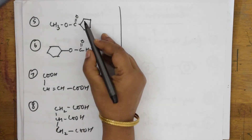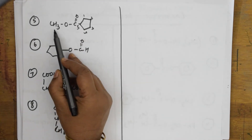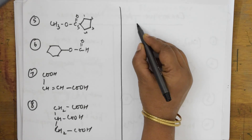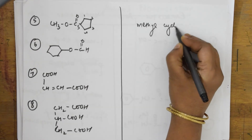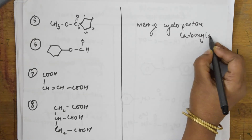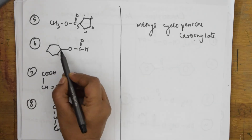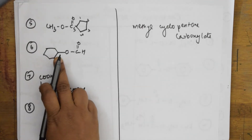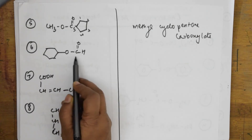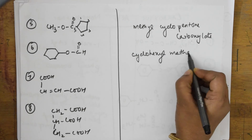Here you have a cyclo group — one, two, three, four, five — pent: cyclopentane. Along with that you have a carboxylate group and a methyl group. This is named as methylcyclopentane carboxylate. In the next example there is a cyclo group with six carbons — one, two, three, four, five, six — hexa. The cyclohexane has a hydrogen replaced by the carboxyl group, so this is named cyclohexyl methanoate.